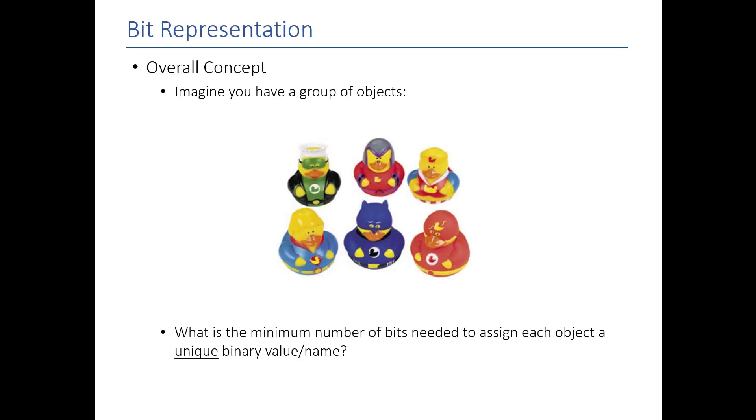Now, we're going to talk about bit representation. And the general idea of bit representation is that given a unique set of things, I want to assign each one its own unique binary value. And you'll see why we're going to do that in the following video. So, let's say, for example, I have six ducks. How can I assign each one a unique binary value?